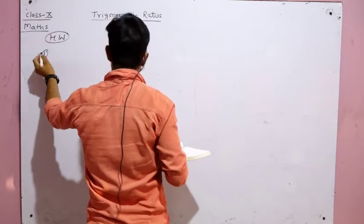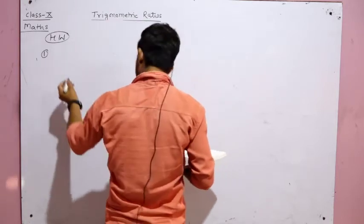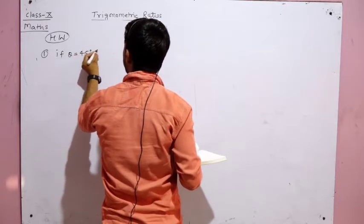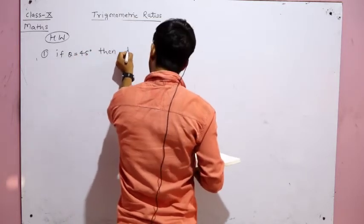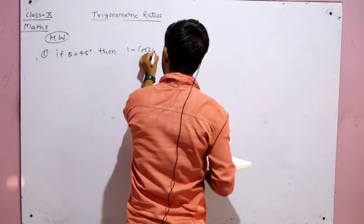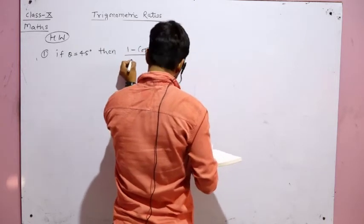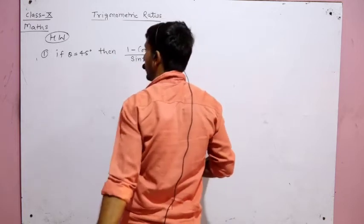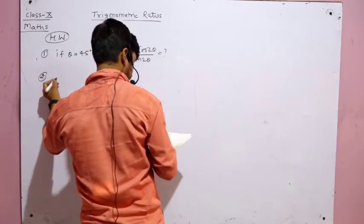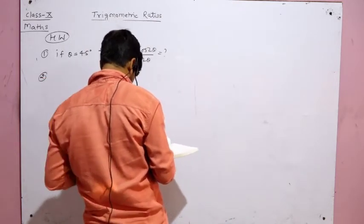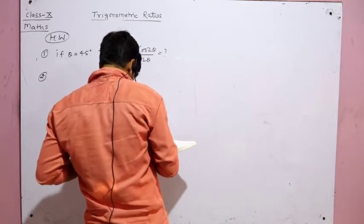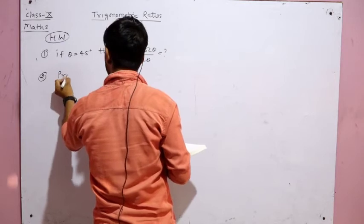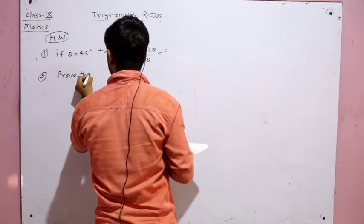Homework question number 1: if θ = 45°, find the value of (1 − cos 2θ) / sin 2θ. Question number 2 has multiple parts to prove.